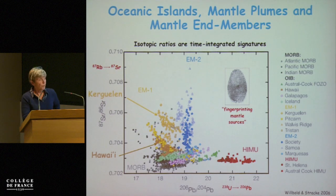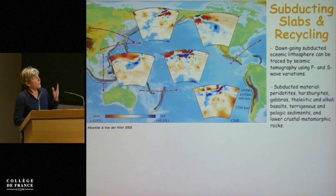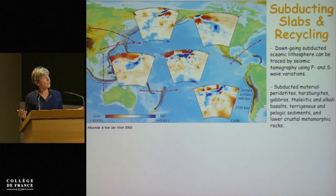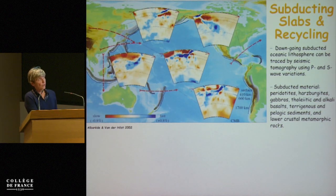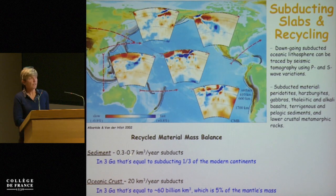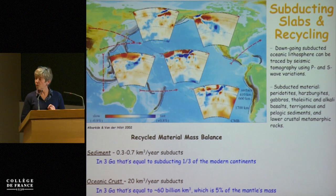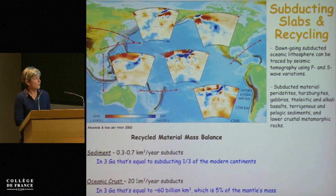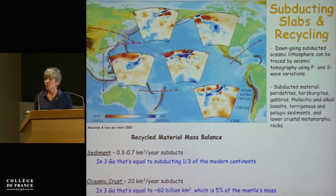You all know this: subducting slabs go down and they bring down heterogeneous material — all kinds of lithology compositions. If we do some mass balance calculation, for instance for sediments, there is between 0.3 and 0.7 cubic kilometers per year that subducts, which means that in 3 billion years it's equal to subducting about a third of the volume of the modern continents. In the same way, oceanic crust subducts much more — about 60 billion cubic kilometers — which is 5% of the mantle mass. So it is significant.